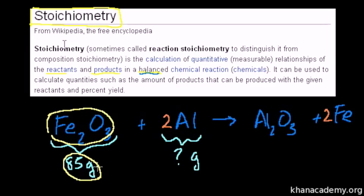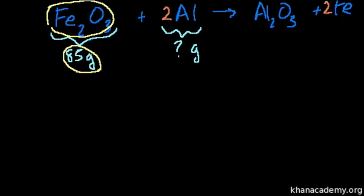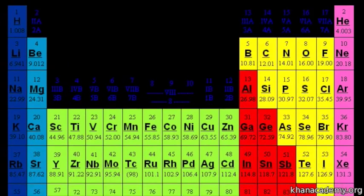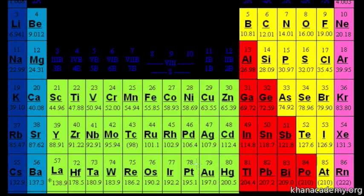So let's first figure out how many moles 85 grams are. What's the atomic mass or the mass number of this entire molecule? We have two irons and three oxygens. So iron is 55.85, I think it's fair enough to round to 56. Let's say we're dealing with the isotope of iron that has 30 neutrons, so it has a mass number of 56. And oxygen we already know is 16.